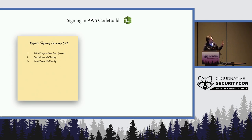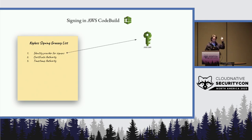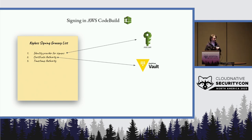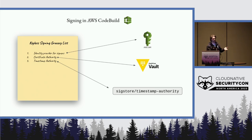Here's an AWS CodeBuild example. We choose our three things: for the identity provider we use AWS IAM for free. For the certificate authority we could choose HashiCorp Vault, which is a Swiss Army knife of security things — you can authenticate using AWS identities and exchange that for short-lived certificates. For the timestamping authority, Sigstore has an open source one you can grab off the shelf, or you could choose Rekor, or find another RFC 3161 compliant timestamping authority.